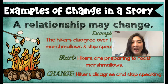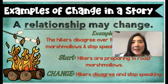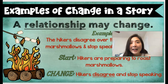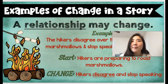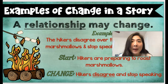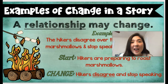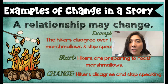The third example of a change in a story is that a relationship may change. For example, the hikers disagree over the best way to roast marshmallows and stop speaking to one another. At the beginning, the hikers are preparing the marshmallows together, but then something changed — they disagreed and stopped talking.